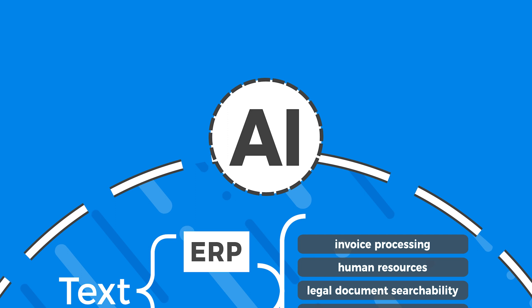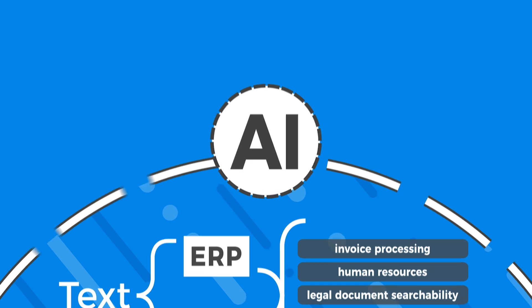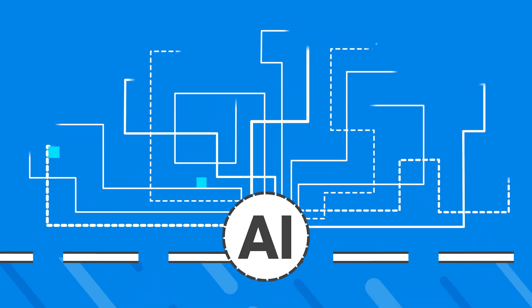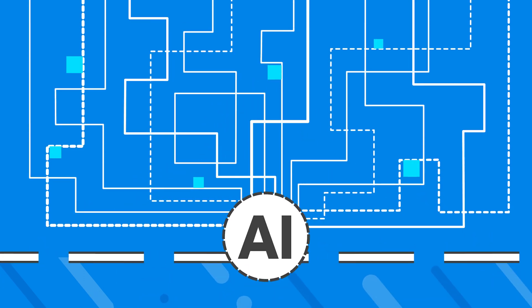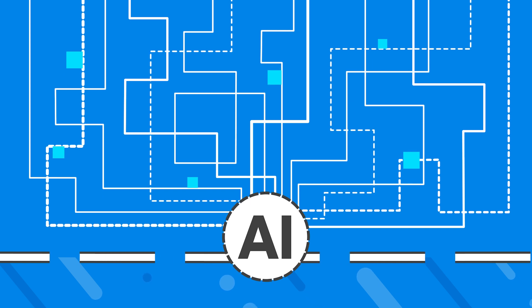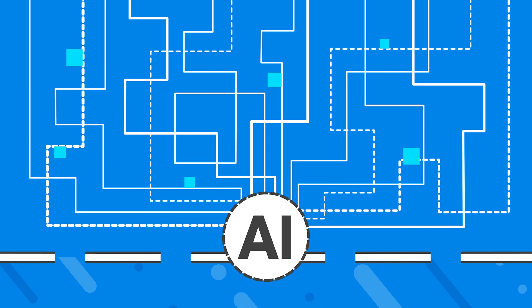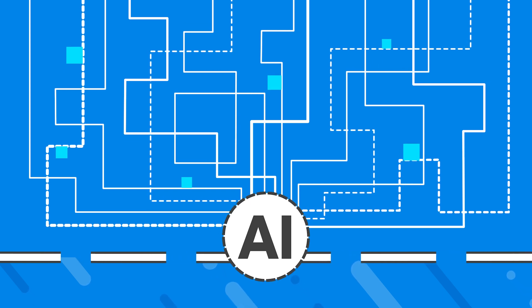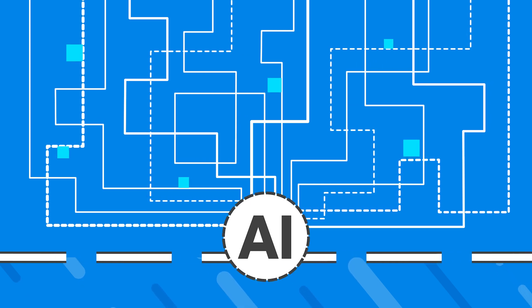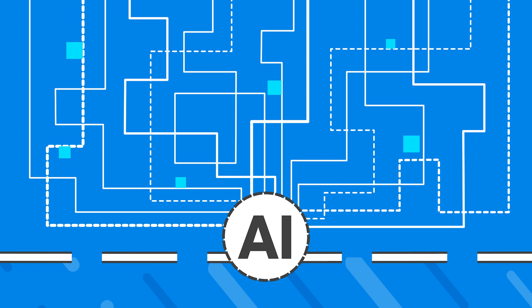When we add AI and machine learning elements to the process, we can further reduce the human intervention required, recognize a wider range of document types and languages, and even mimic the way the human brain recognizes patterns and context.